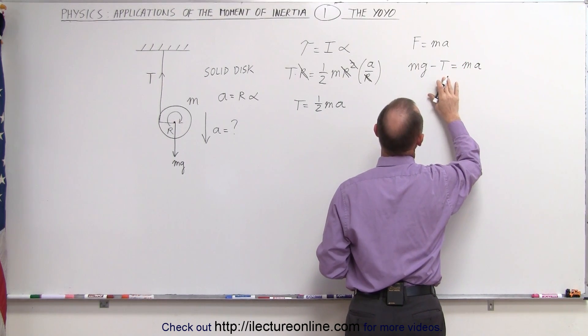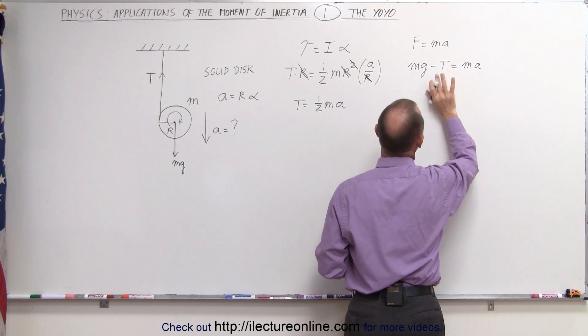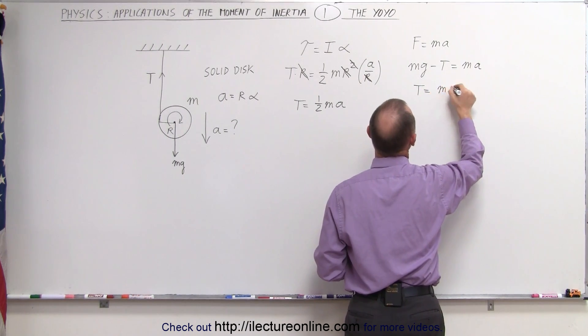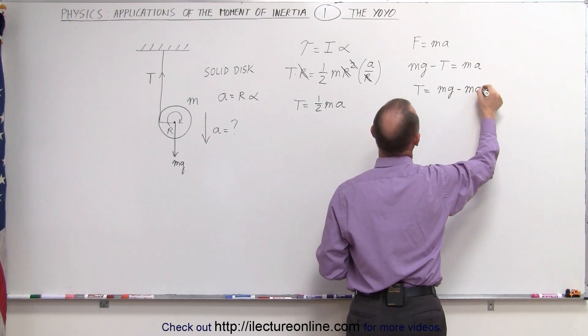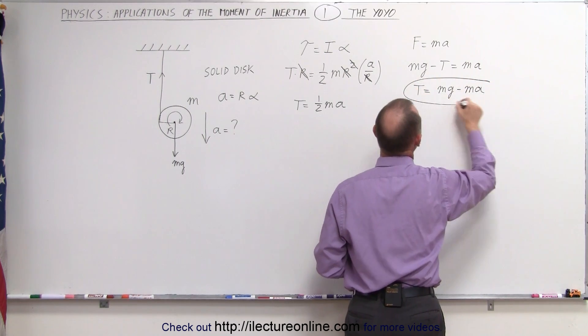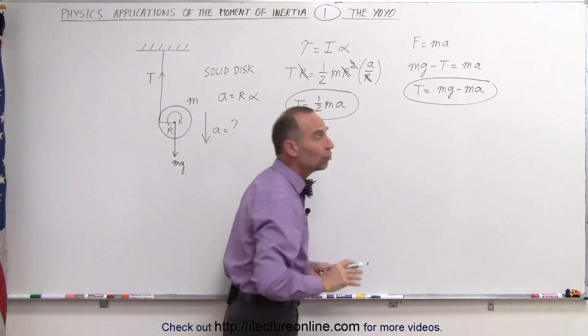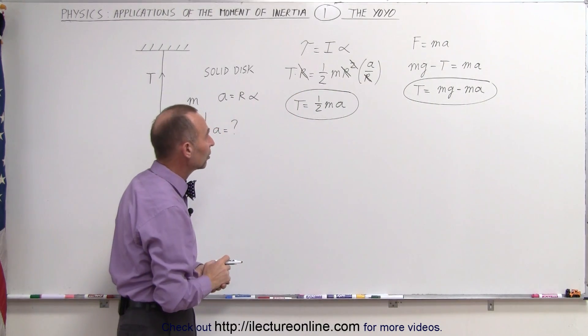If I solve this for the tension moving this to the other side and moving this here, turn the equation around, I can say that then the tension is equal to Mg minus MA. So now we have the two equations for the tension, this one and this one, so we can eliminate the tension by setting those equal to each other.